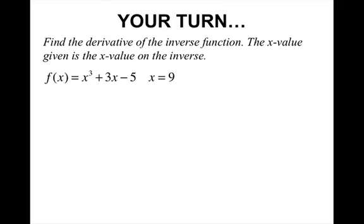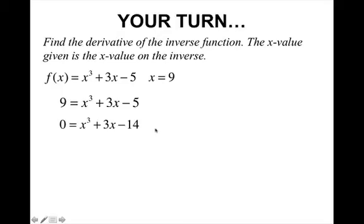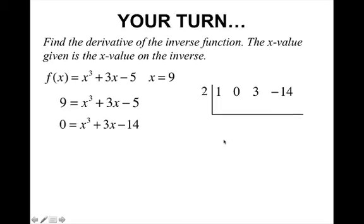Your turn — find the derivative of this inverse function. The given value is the x value on the inverse, so it's the y value on the original. Set it equal to 9 and get one side equal to zero. You'll need to use synthetic division, trying 2 as a possible rational zero. Set up synthetic division — you always start with zero, then add down, multiply, add, multiply, add.